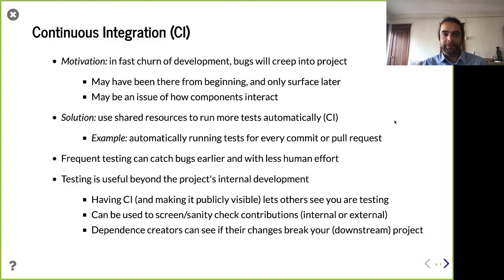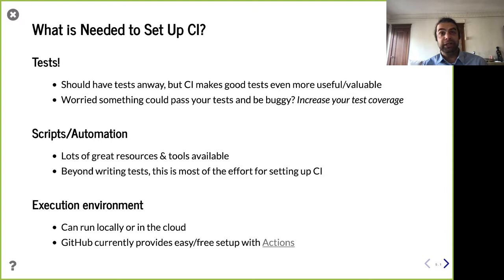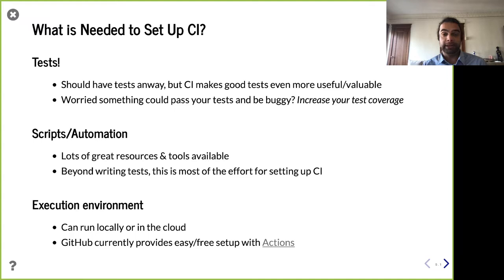To set up CI, you need three things: you need tests, you need a way to script and automate the execution of those tests, and you need a place to run them. You should have tests anyway, and CI is a real big value-add on top of them. You get way more bang from your tests if you have CI — you can use them to screen pull requests, other people can see your tests are working and gain confidence in your project, and you're running them continuously.